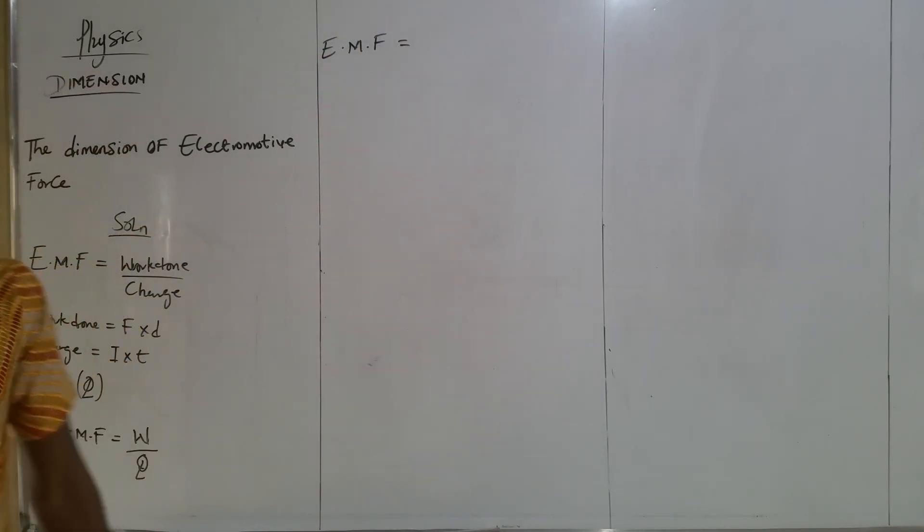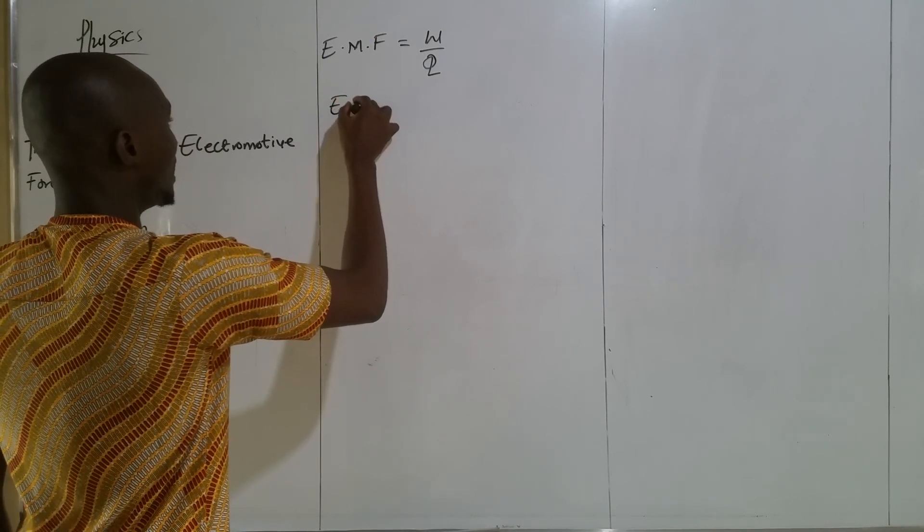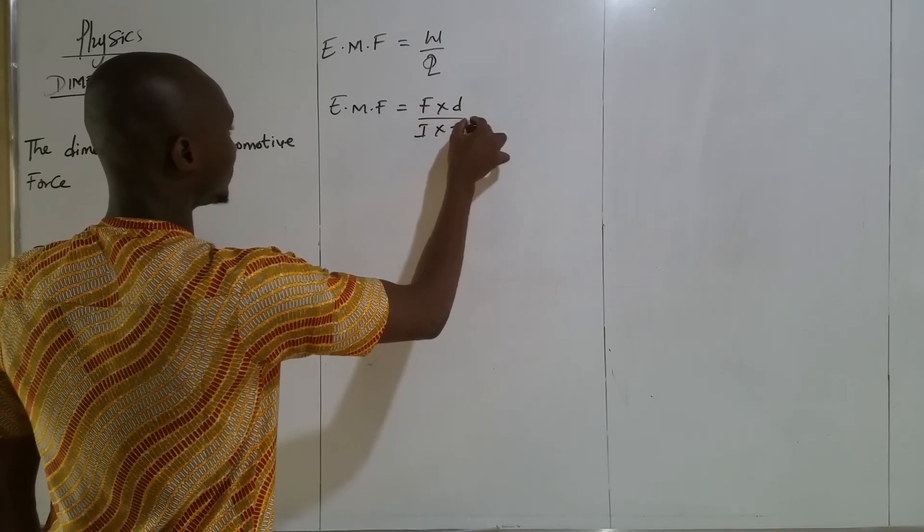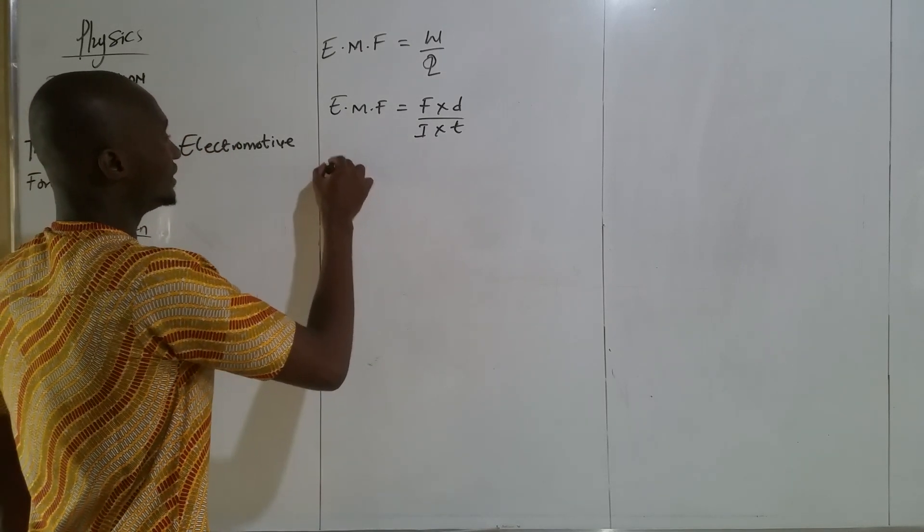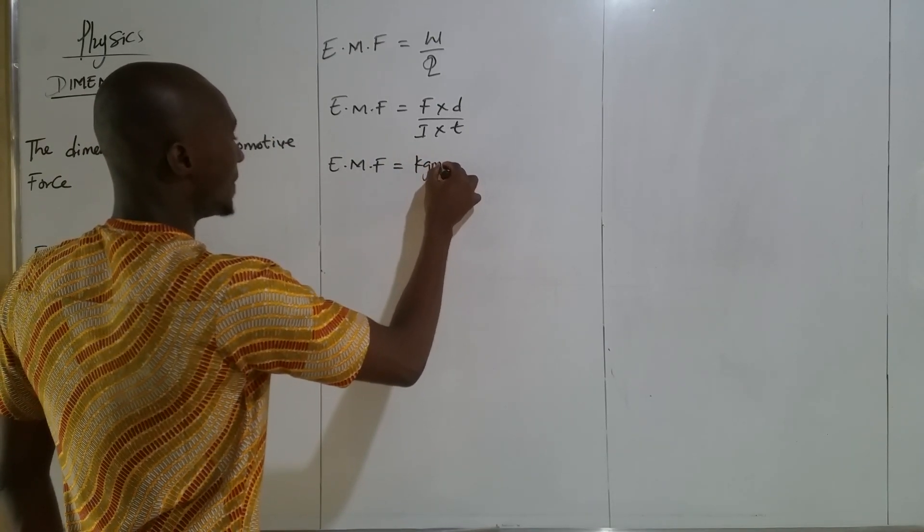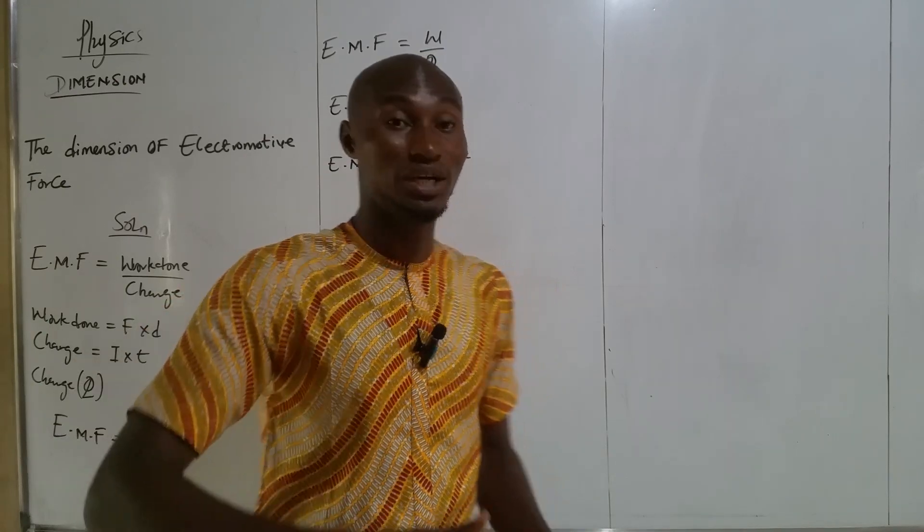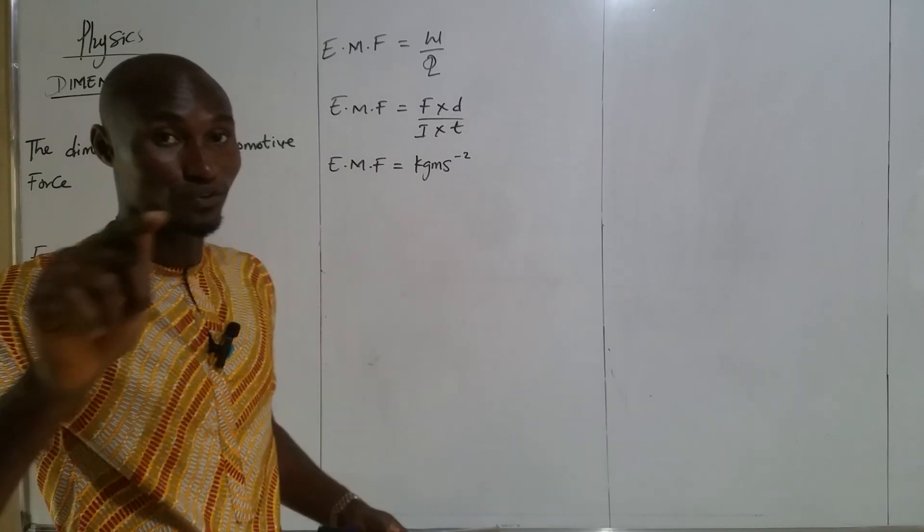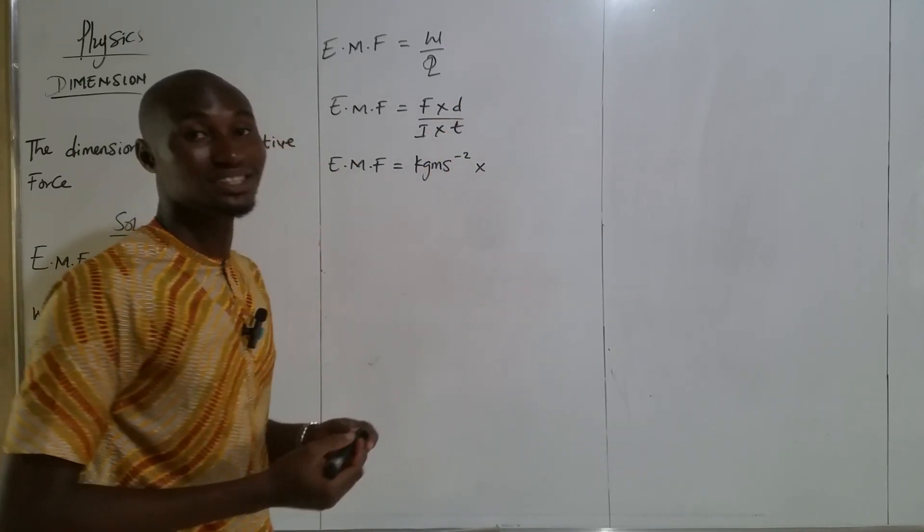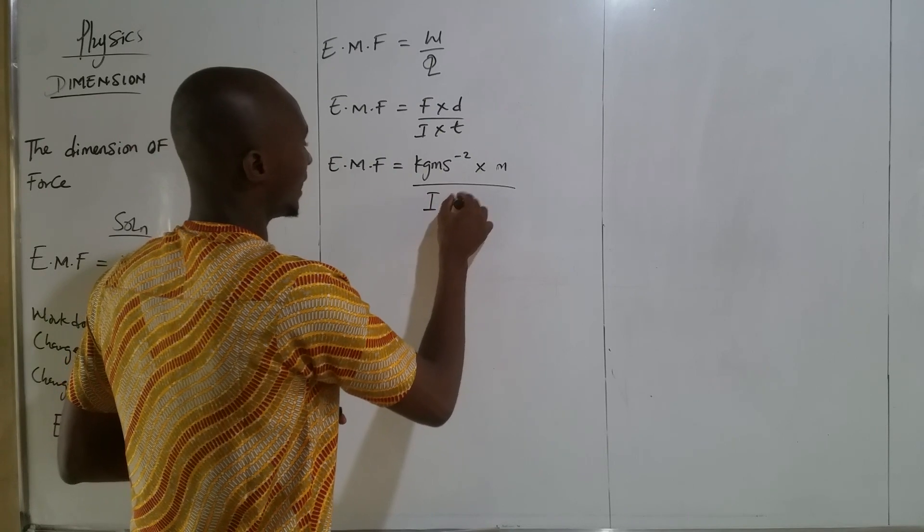So EMF equals to F times D all over I times T. Now, we know that force is kg m s⁻². In case you don't understand this, if you are seeing this video for the first time, click subscribe to my channel. You'll see videos I made on the dimension of force and how we obtain units of force. So times distance, which is measured in meters, m, over I times T.